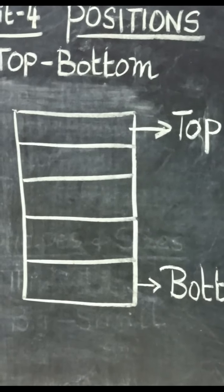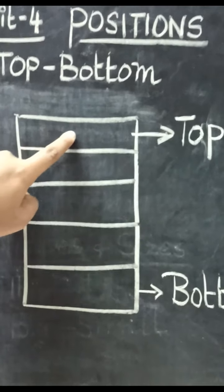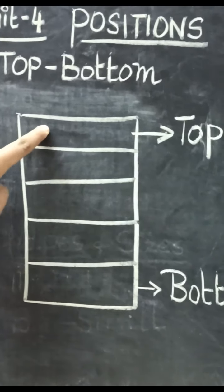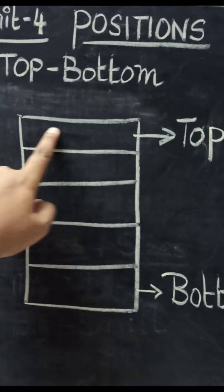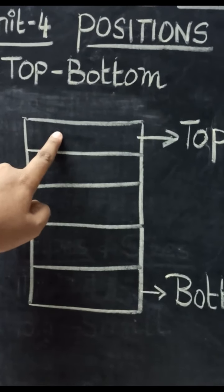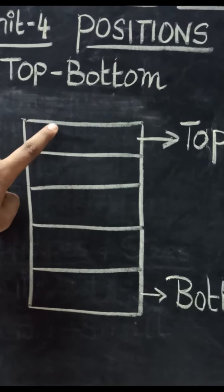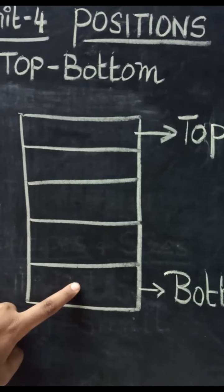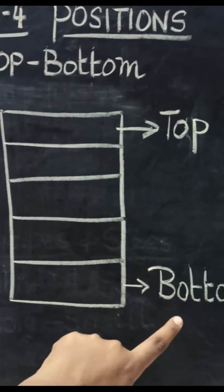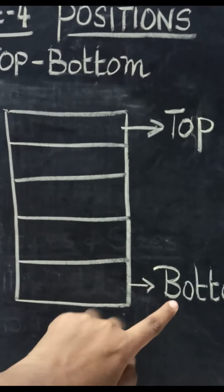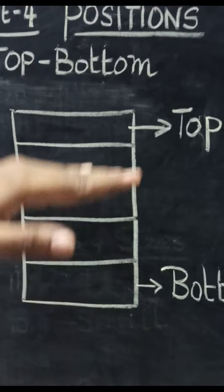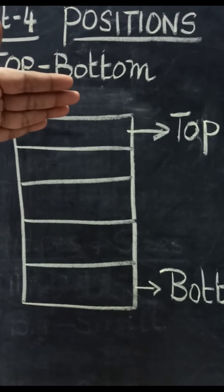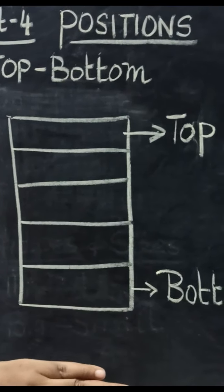What do you call this floor? The floor at the top is called the top floor. So the position here is top. The position at the top is top, and the position at the bottom is bottom. Do you understand how to compare top and bottom? Top means at the top, bottom means at the bottom.